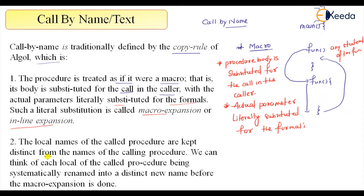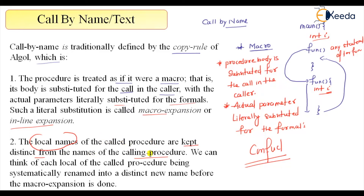Another point is that the local names of the called procedure are kept distinct from the names of the calling procedure. For example, if there is an int i defined in the called procedure and in main there is also an int i, then during this expansion there will be a conflict about which i is being referred to. So local names are kept distinct, and we can think of each local of the called procedure as being systematically renamed into a distinct new name before the macro expansion is done — renaming is done systematically.